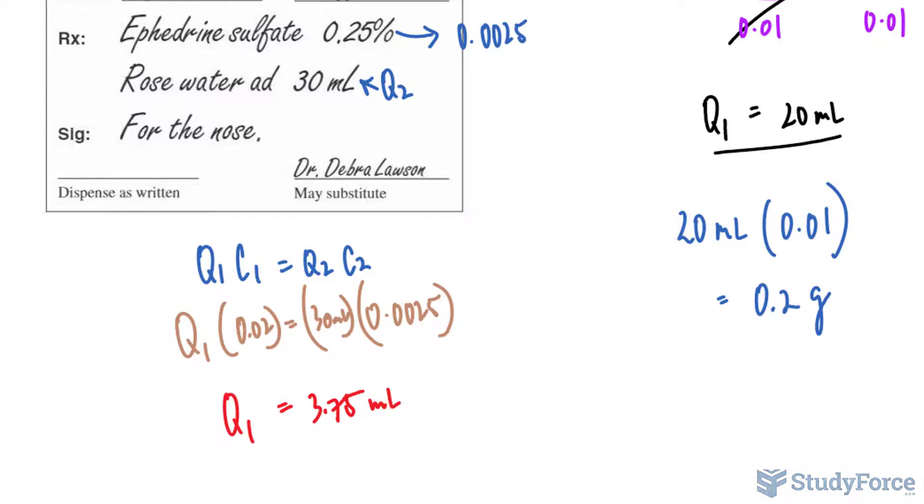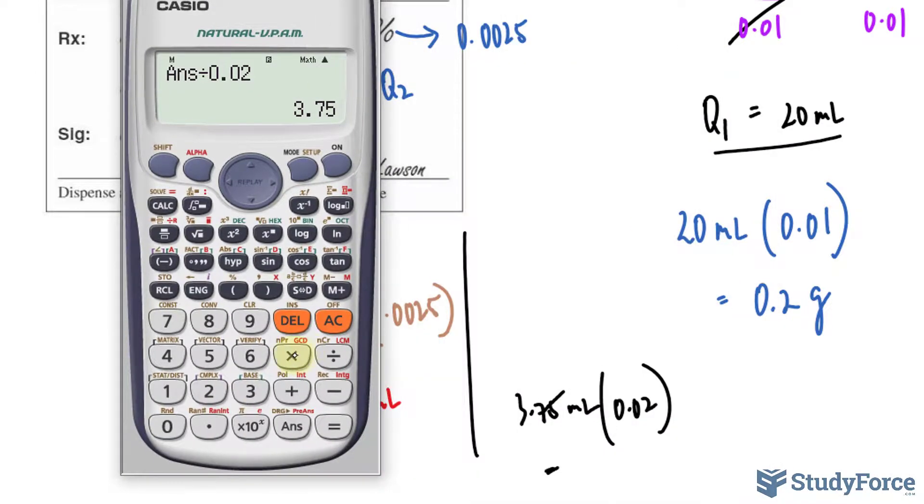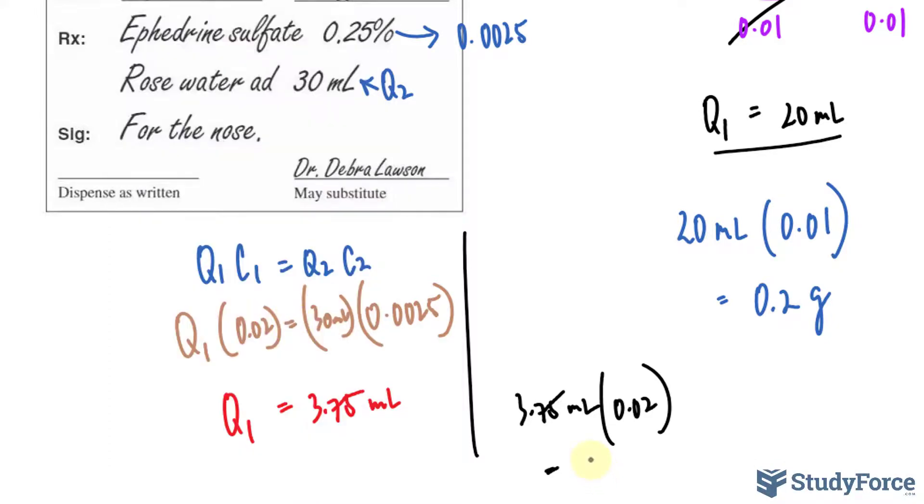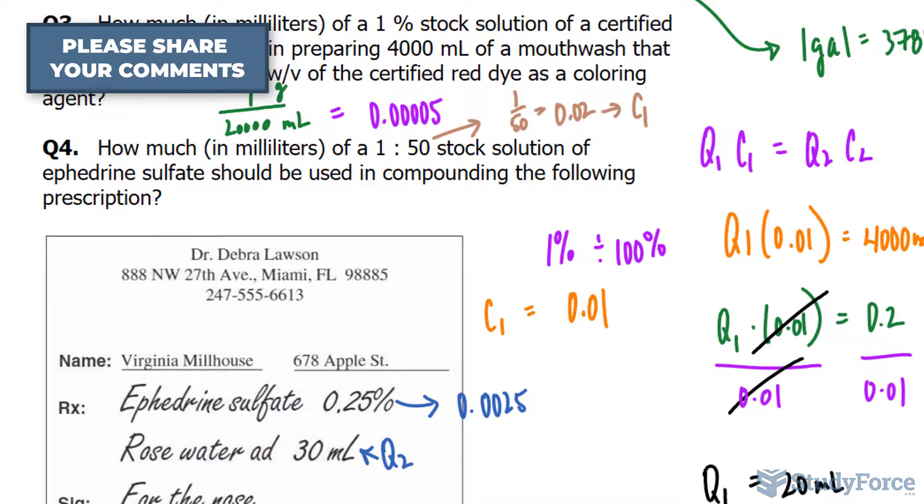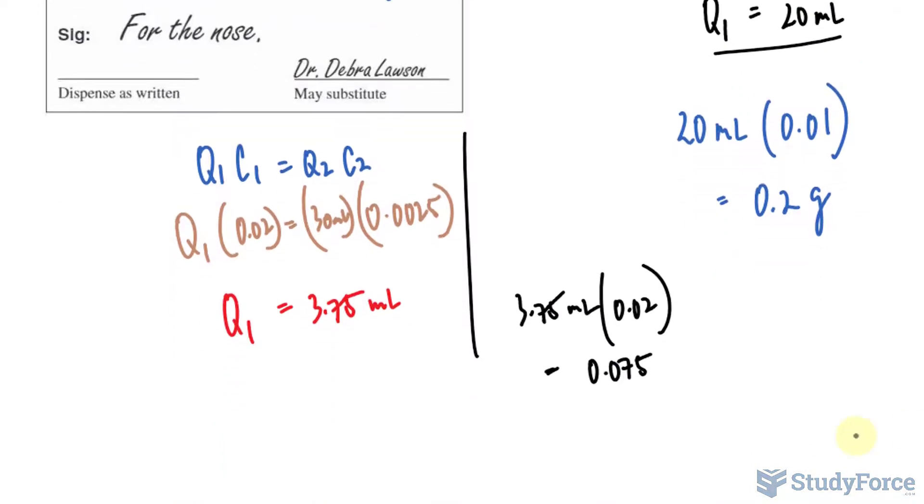Again, if they ask for the amount of active ingredient for the stock solution, you take 3.75 milliliters and multiply it by its percentage of 0.02. There is 0.075, and they don't tell us whether it is weight per volume or volume per volume, so the amount of active ingredient could be 0.075 milliliters or grams, they don't specify.